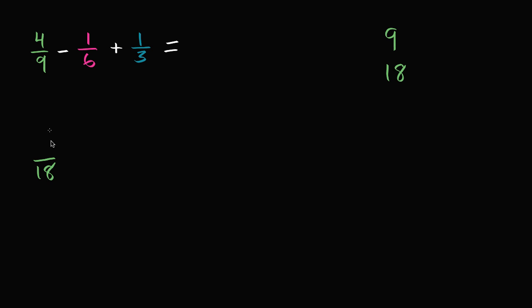So 4/9 is what over 18? Well, 9 times 2 is 18. That's what I did as a denominator. So I have to multiply the numerator by 2 as well. So this is going to be 8 over 18. Well, what's 1/6 over 18? Well, to go from 6 to 18 in the denominator, I have to multiply by 3. So I have to multiply the numerator by 3 as well. So 1 times 3 is 3.